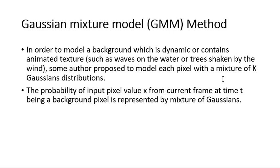The next method is the Gaussian Pixel Model. To model a background, we consider different phenomena like waving trees and leaves shaken by wind. The proposal is to model each pixel with a mixture of Gaussian distributions, measuring the probability of an input pixel from the current frame at time t being a background pixel, which is represented by the mixture of Gaussians.